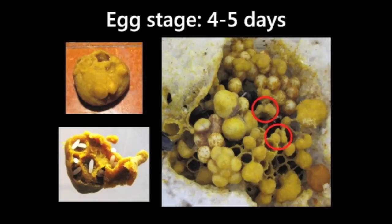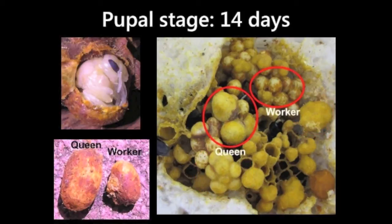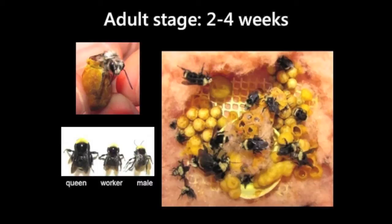The first developmental stage of bumblebees is the egg stage. The next stage of development is the larval stage. Bumblebees progress to the pupal stage of development. The last stage of development is the adult stage.